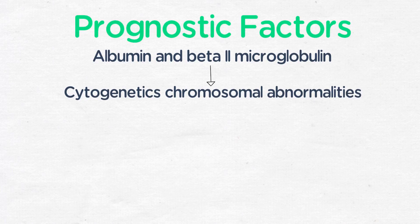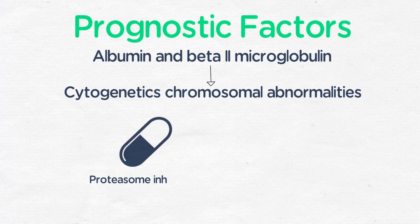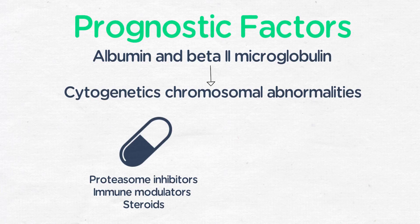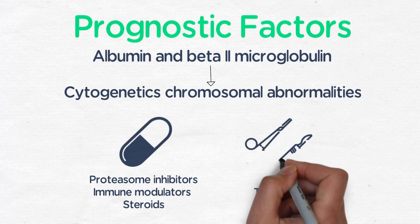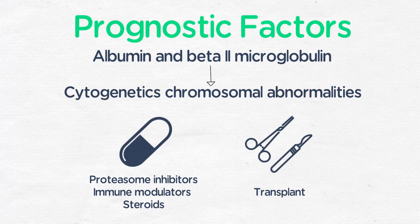Once the diagnosis is established, you start treatment. There are many options, including proteasome inhibitors like bortezomib or carfilzomib, immunomodulators like lenalidomide or thalidomide, and steroids like dexamethasone. We also transplant many patients who are on the younger side or who are transplant-eligible and capable of going through high-dose melphalan.